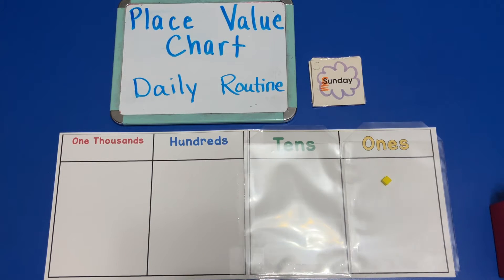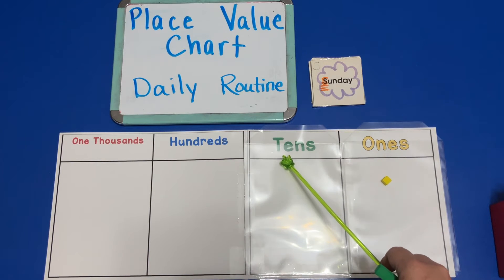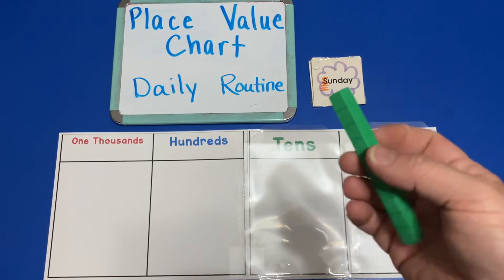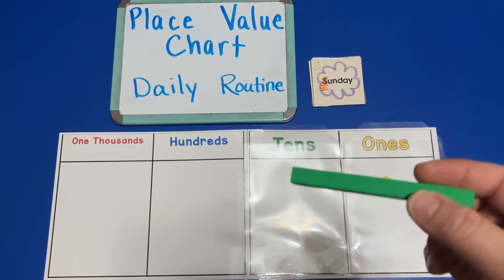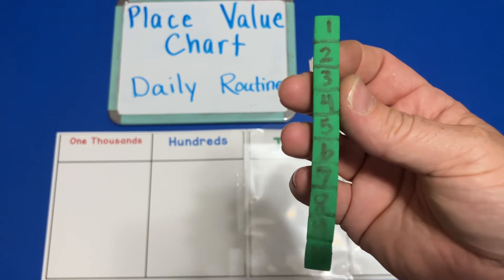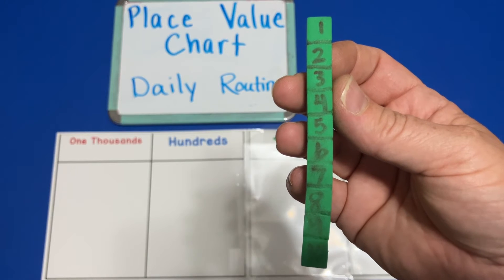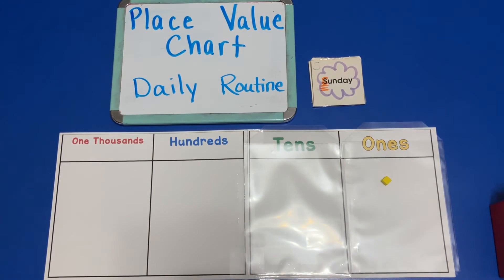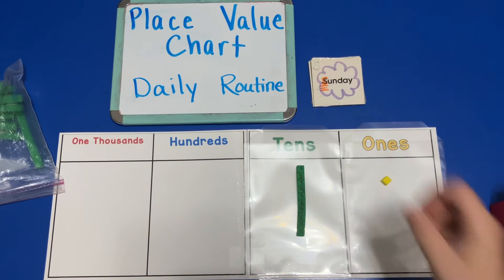The next part of the place value chart is the tens place. This piece is called a ten long — it can also be called a rod or a group of ten. Sometimes I write the numbers on it to show students how it can be split up. You can see how this ten long can be made by putting ten ones together, and I'm going to show you that now.